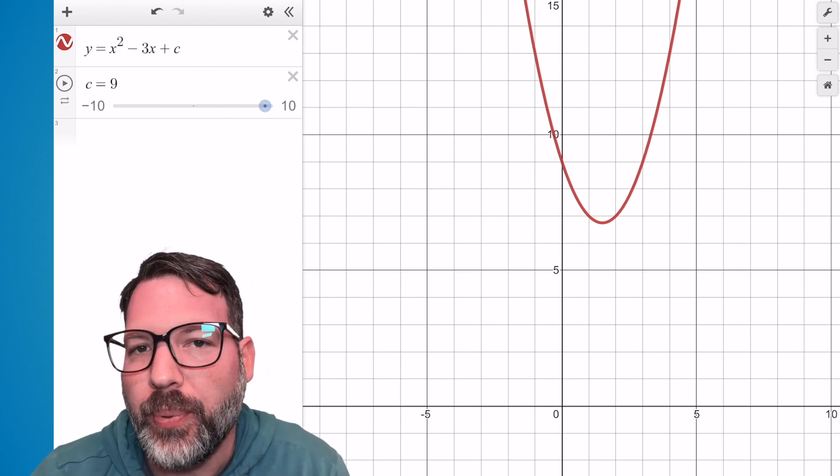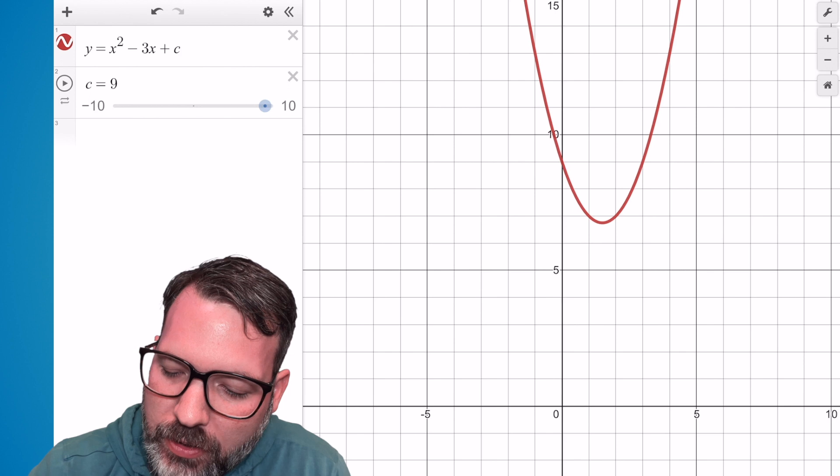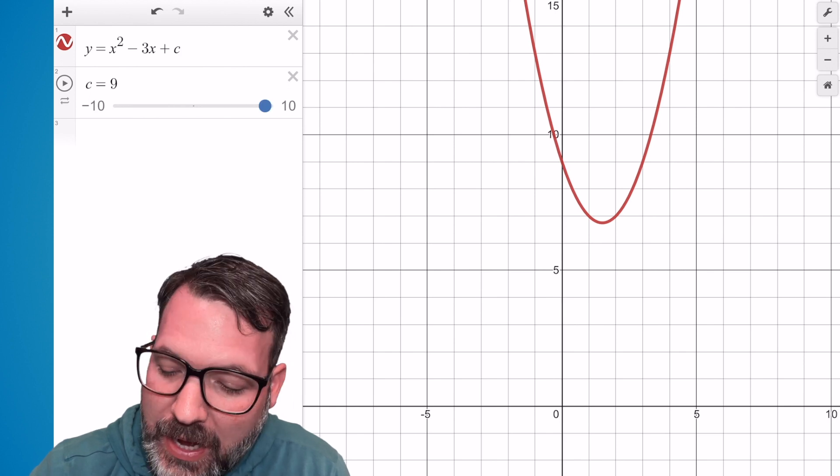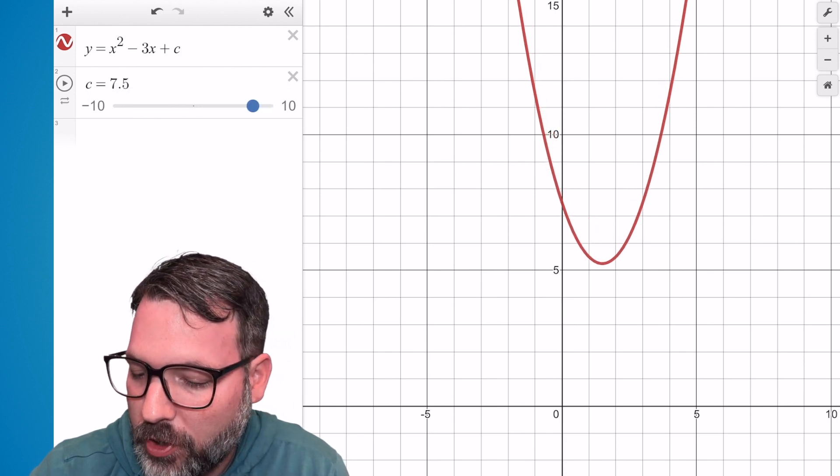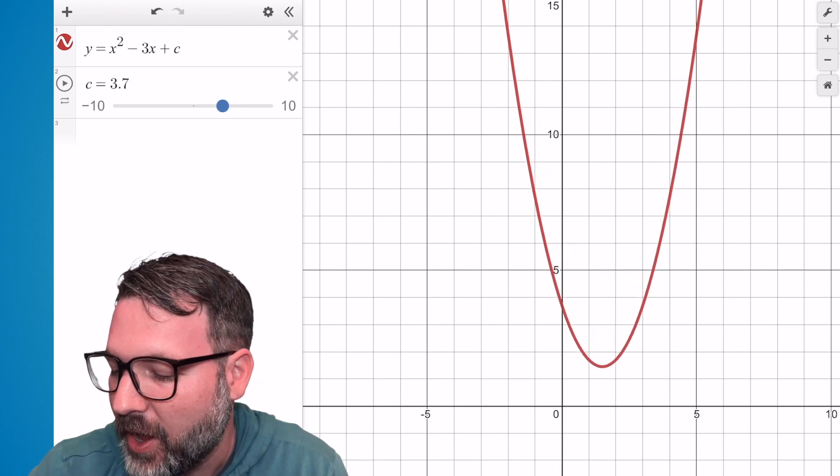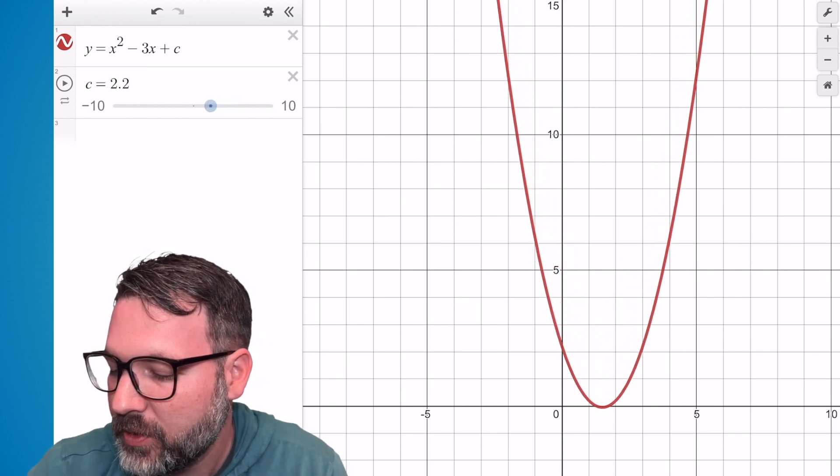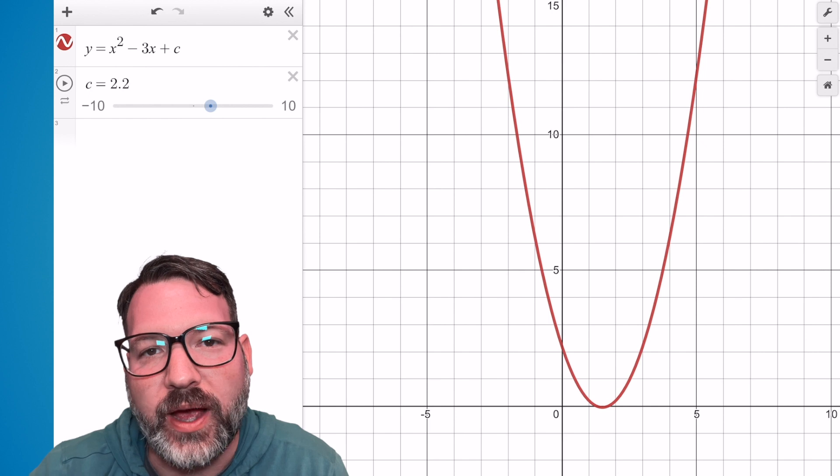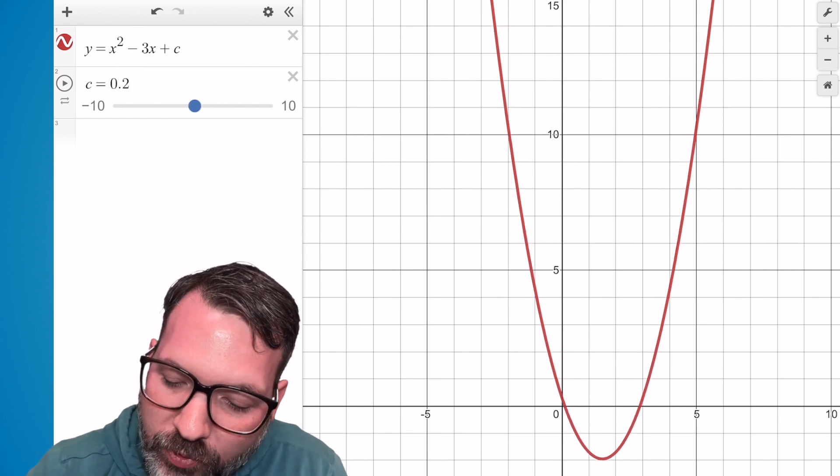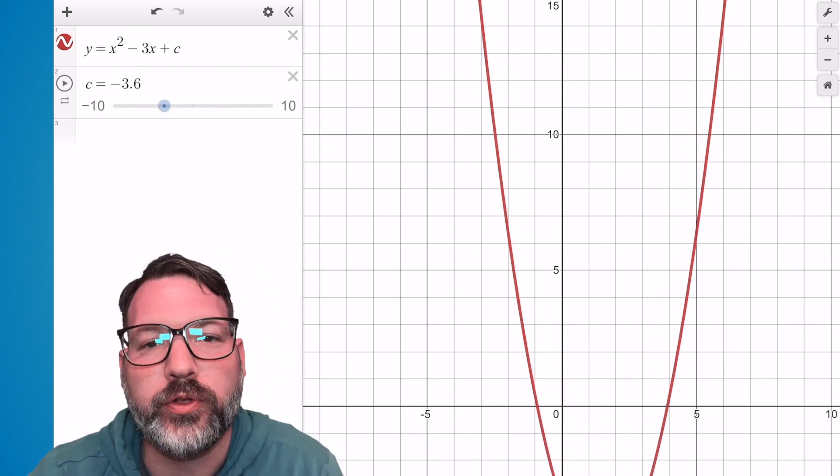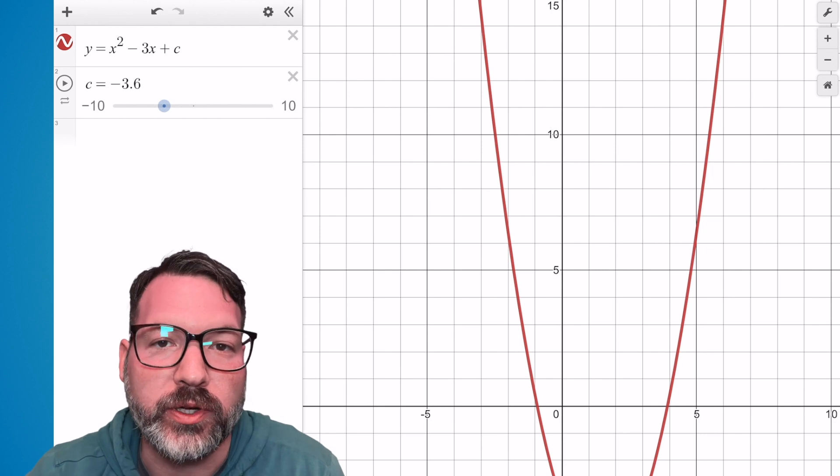It's way up here, above the x-axis. If we take that constant at the end, which was 9, and we just make it smaller, smaller, smaller, smaller, we can eventually cause that graph to first touch on the x-axis, in which case it would have one real solution. Or if we push that parabola down a little bit further, obviously we see those two real solutions once again.